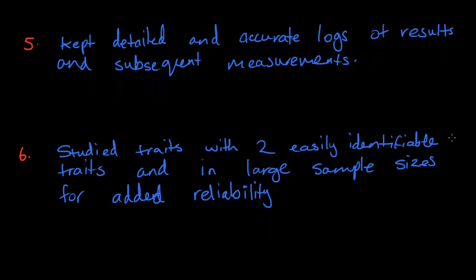Number six: he studied traits with two easily identifiable characteristics. Since he did this in large sample sizes, it allowed for reliability. As mentioned before, you can get reliability by repeating the experiment, but in this case he also achieved it by having a large sample size.